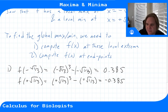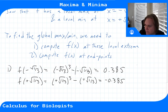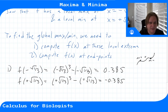The local max value (0.385) being larger than the local min (-0.385) is expected, but it's not always the case—you could have a configuration where the local max value is less than a local min value elsewhere on the function.